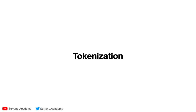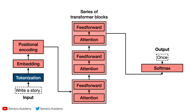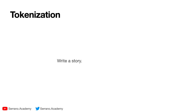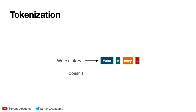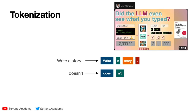The first block in a transformer is tokenization, right after you input the text. Tokenization breaks everything into units — for the most part, each unit is a word. The sentence 'write a story' becomes tokens for 'write,' 'a,' 'story,' and the period, because punctuation signs also have tokens. Sometimes tokens exist for beginning and end of sentence. Some words like 'doesn't' get broken into two tokens: 'does' and 'n't.' For more on tokens, check out the video by Jay Alomar called 'Did the LLM Even See What You Typed,' also a chapter in his book 'Hands-on Large Language Models.'